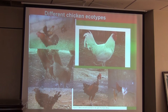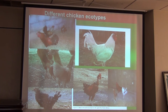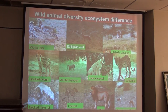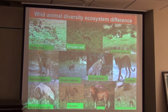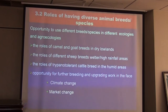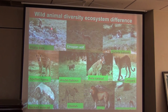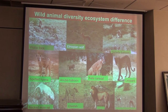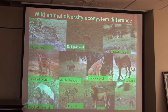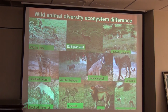There are different chicken ecotypes in our country, and characterization and identification is still ongoing. Ethiopia has diverse bird species. Among mammals, from the afro-alpine ecosystem to the desert and semi-desert scrubland, we have different wild animal species. The Walia ibex is known as an endangered species, and the Ethiopian wolf, Canis simensis, is also categorized as endangered.